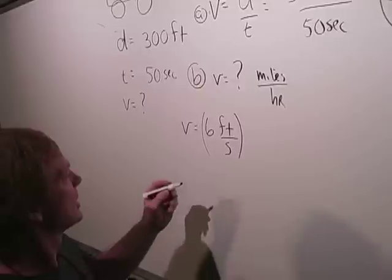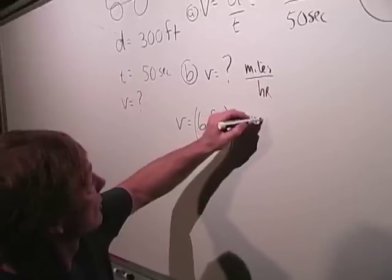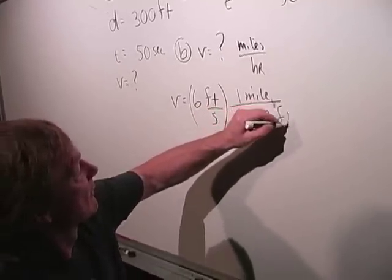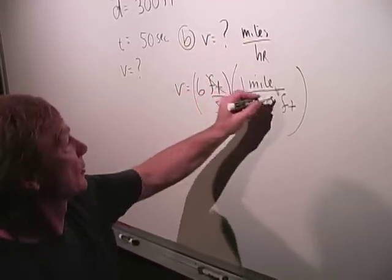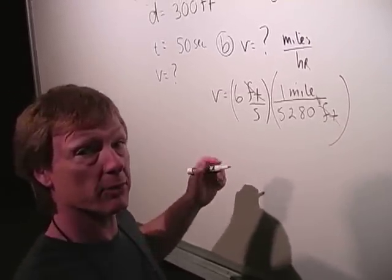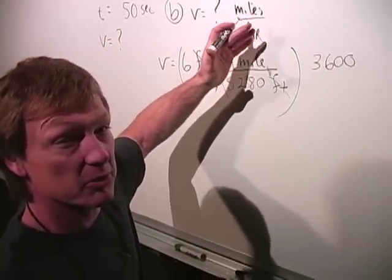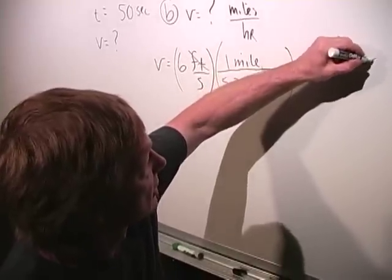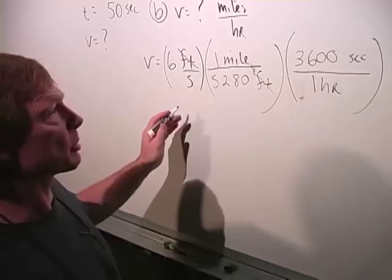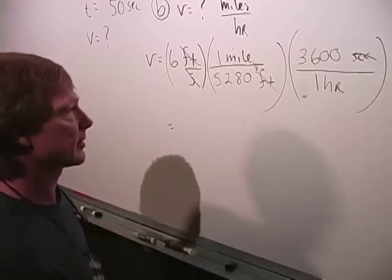And I multiply that by, I need miles per hour instead of feet. So I need miles on top and feet on the bottom. So I'll say there's one mile for every 5,280 feet. Feet will cancel, I'll have miles per second. Now I want seconds to cancel, so I'll need seconds on top and hours on the bottom. So I've got 3,600 seconds per one hour. Now the units will tell me if I did it right. Seconds cancel. I'm going to have miles per hour.